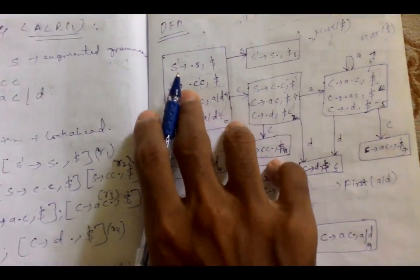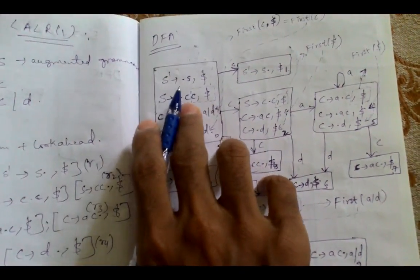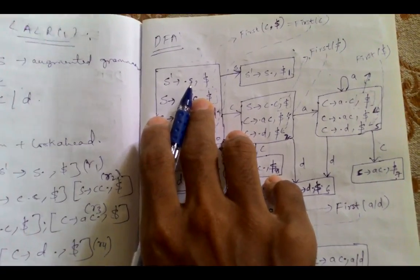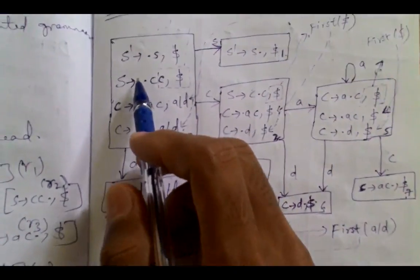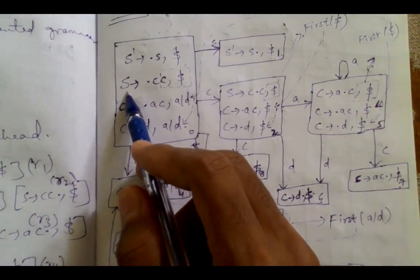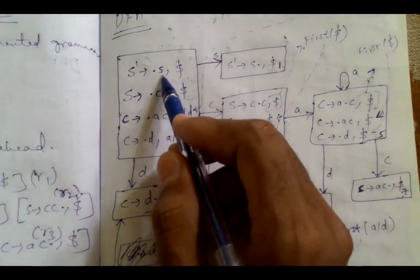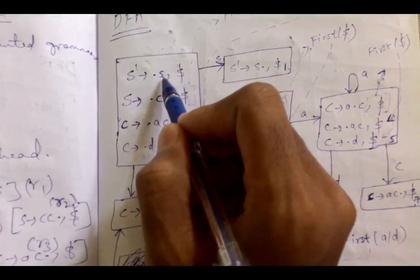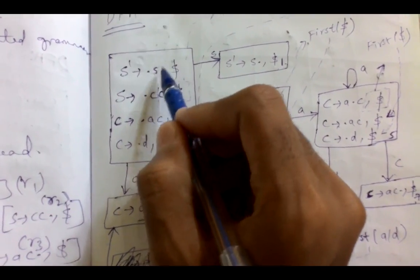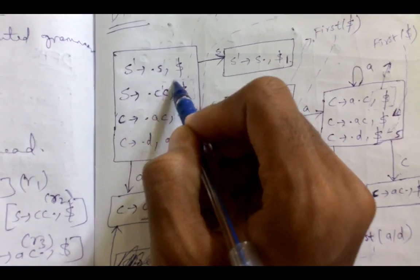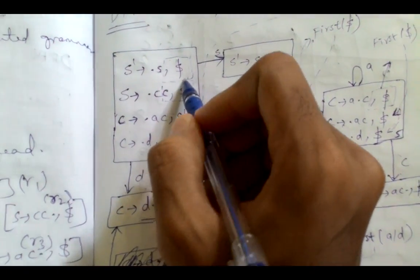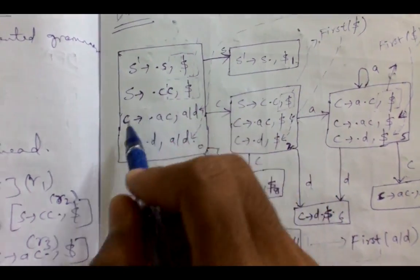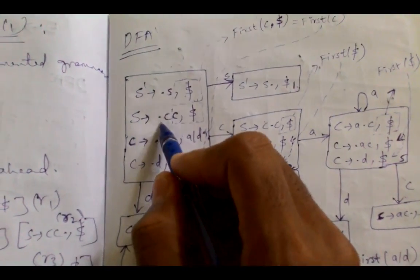For the DFA, we consider LR(1) items, not LR(0) items. The first LR(1) item is S' → •S, $ (dot S, dollar). Since the dot is before a non-terminal, we need to expand it. When we expand S, we get S → •CC, $. Whenever we expand a non-terminal, we need to check whether the lookahead symbol is changing.